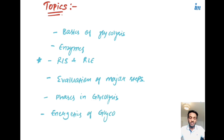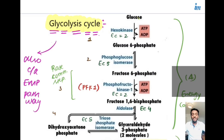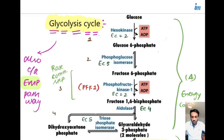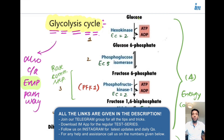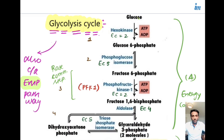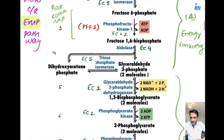Glycolysis is also called the EMP pathway. It is called EMP because the scientists who discovered it had names starting with E, M, and P. It's not very important to know their names. I'm mentioning this because there is also a similar pathway called the HMP pathway, which we will discuss in another video where we will differentiate between EMP and HMP, their main rate limiting enzymes and how they function.